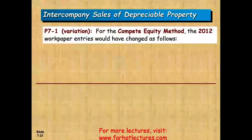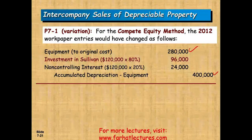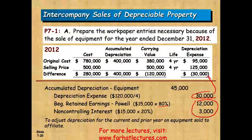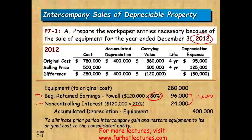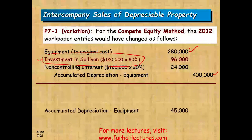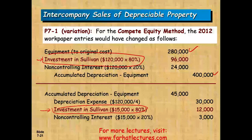If using the complete equity method, the entry to restore the asset and accumulated depreciation changes: instead of debiting beginning retained earnings, we debit investment in S Company, because the investment account already reflects everything. Similarly, in the depreciation adjustment entry, we credit the investment account rather than beginning retained earnings.